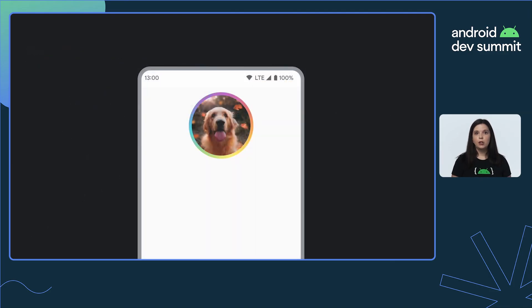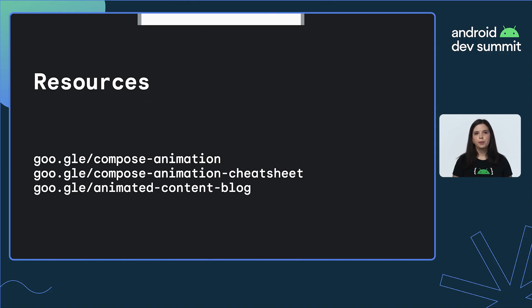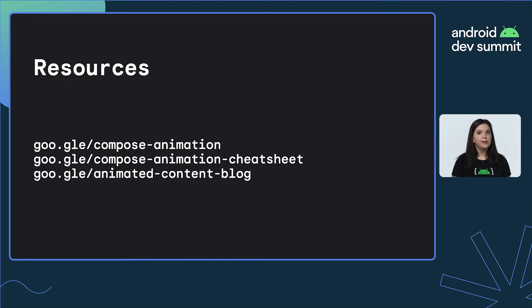Now take a look at that rotating rainbow gradient. Adding a simple rotation animation makes the profile pic stand out way more. And that's it — hopefully you've seen how quickly you can add animations to your Compose apps. For more information on animations in Compose, check out the following links. I'm off to go move some more pixels around on a screen. See ya!